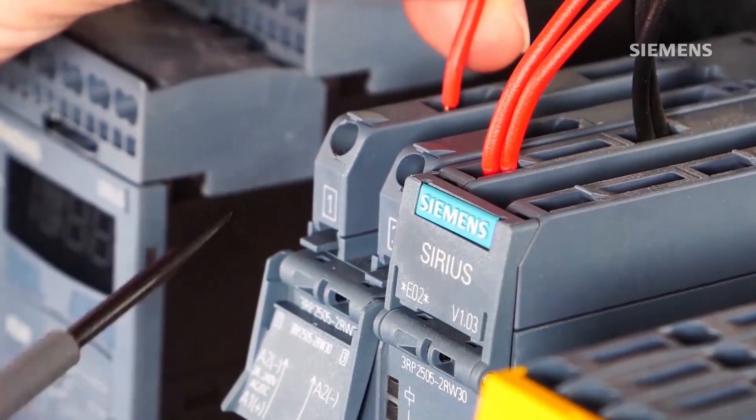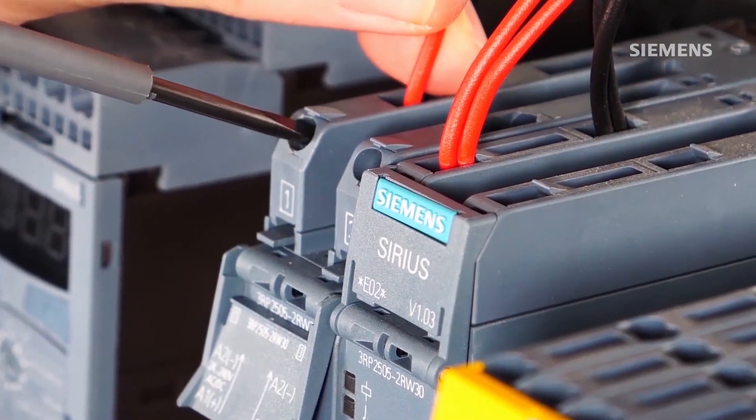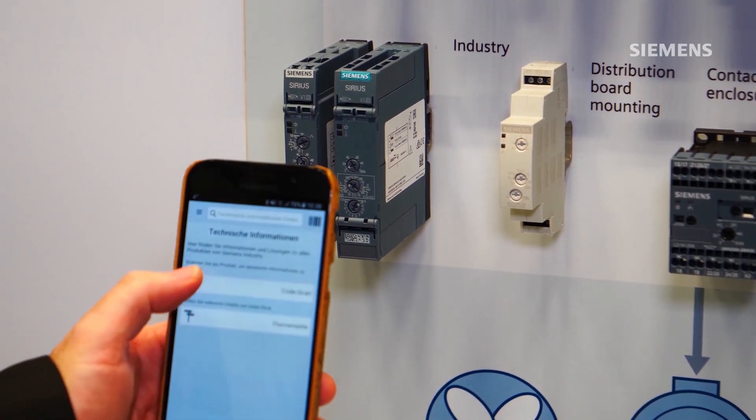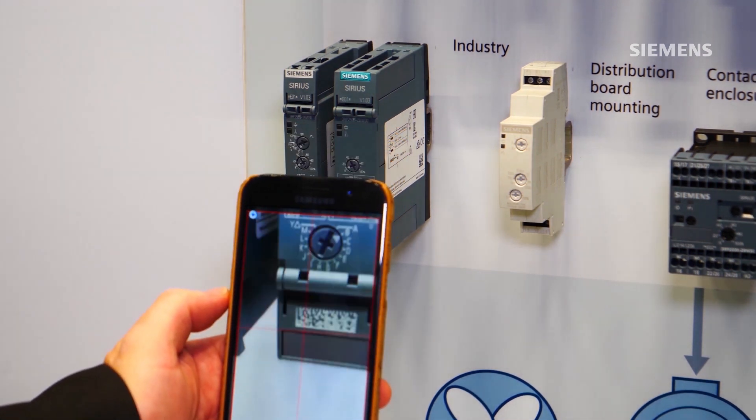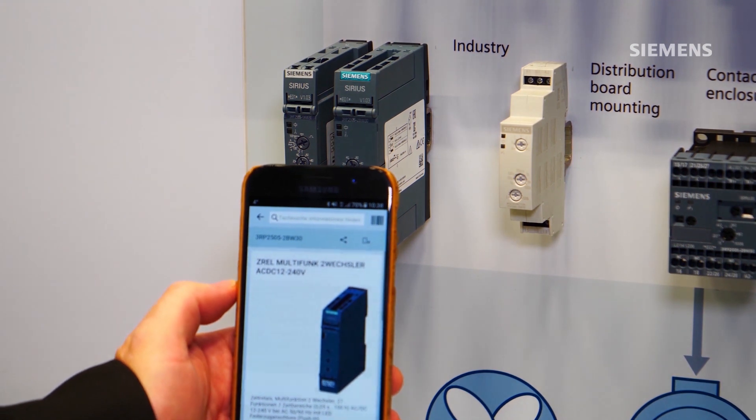The label terminal covers simplify the assignment of connections during wiring. By scanning the 2D codes, you can quickly access the documentation of the device in the Siemens Industry Support app, for example.